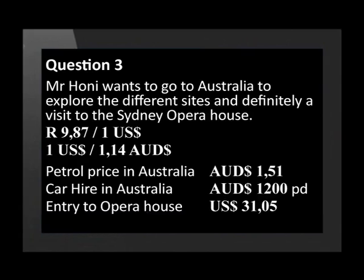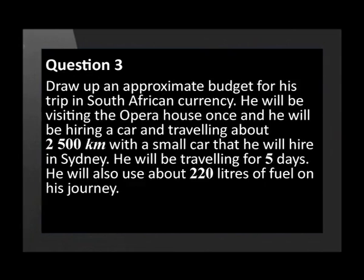Petrol price in Australia is 1.51 Australian dollars. Car hire in Australia is 1,000 Australian dollars per day. Entry to the Opera House is 31.05 United States dollars. Draw up an approximate budget for his trip in South African currency. He will be visiting the Opera House once, hiring a car and travelling about 2,500 kilometres with a small car hired in Sydney. He will be travelling for five days and will use about 220 litres of fuel on his journey.